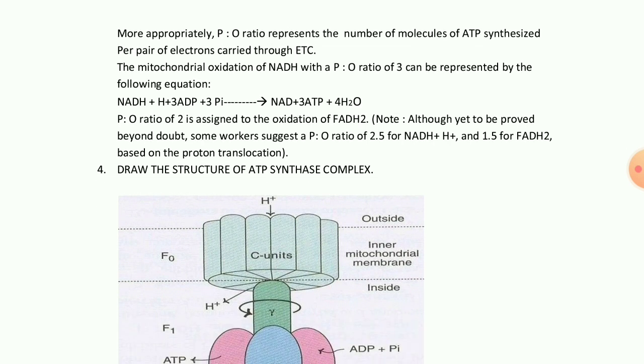When FADH2 is involved in the electron transport chain, it donates electrons to complex two. In this process, 6 H+ ions are pumped out from matrix to intermembrane space. So 6 H+ ions can generate 2 ATP molecules.